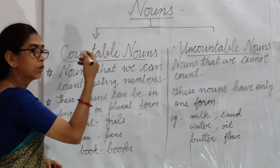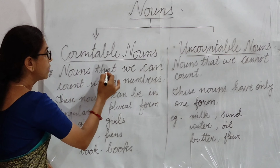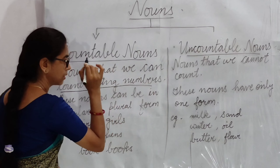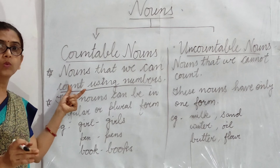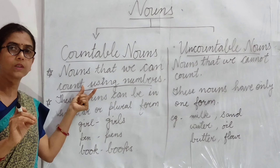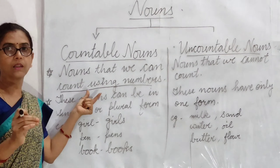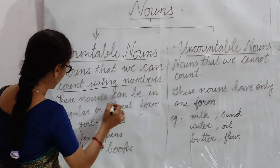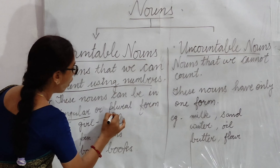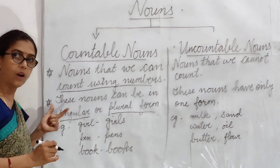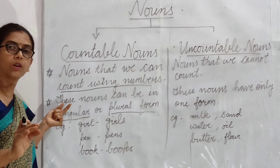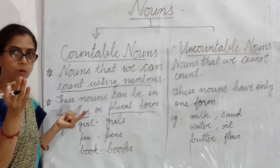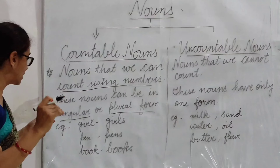Countable nouns kya hoate hain? Nouns that we can count using numbers — aisay nouns jinko hum numbers use karke count kar saktay hain, unhay kehtay hain countable nouns. These nouns can be in singular or plural form. Jitne bhi countable nouns hoate hain, hum unka singular form bhi use kar saktay hain aur plural form bhi bana saktay hain.